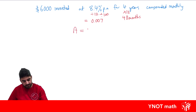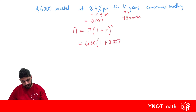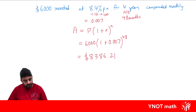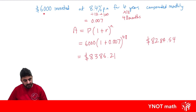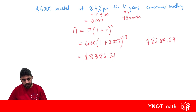Our formula is A equals our starting amount outside of (1 plus our interest rate as a decimal) to the power of our time period. We've got 6,000 outside of (1 plus 0.007) — we've already divided by 100 — to the power of 48. This gives us eight thousand three hundred and eighty-six dollars and twenty-one cents. With yearly compounding we ended up with $8,284.54. The same amount of money, the same rate, the same time period — the only difference was compounding monthly. The more often you compound, the more money you're going to end up with.